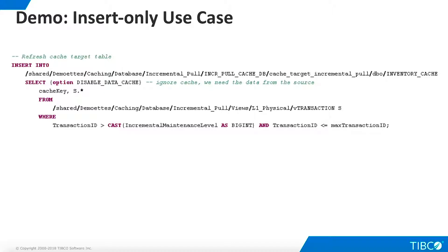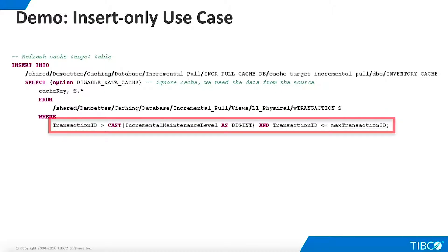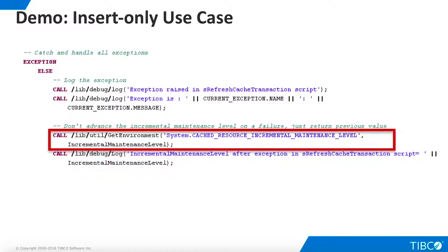Now let's look at the refresh script. Since it is very similar to the initialization script, we'll concentrate on the differences. The WHERE clause in the INSERT statement uses only rows that are new since the last incremental maintenance level. We have also introduced exception handling — in the event of a failure, we ensure the incremental maintenance level is not changed.